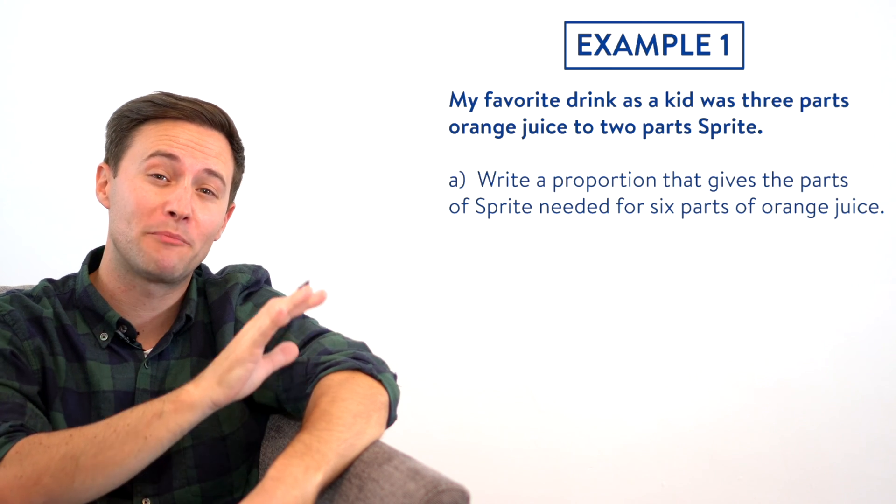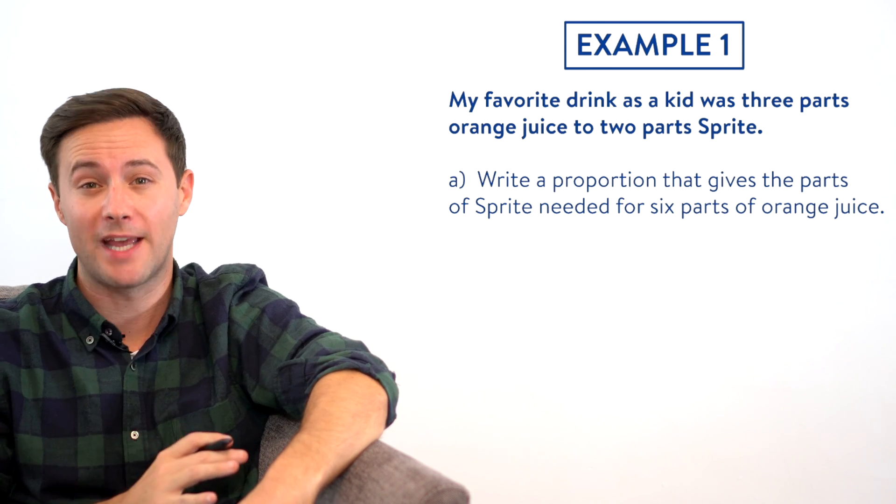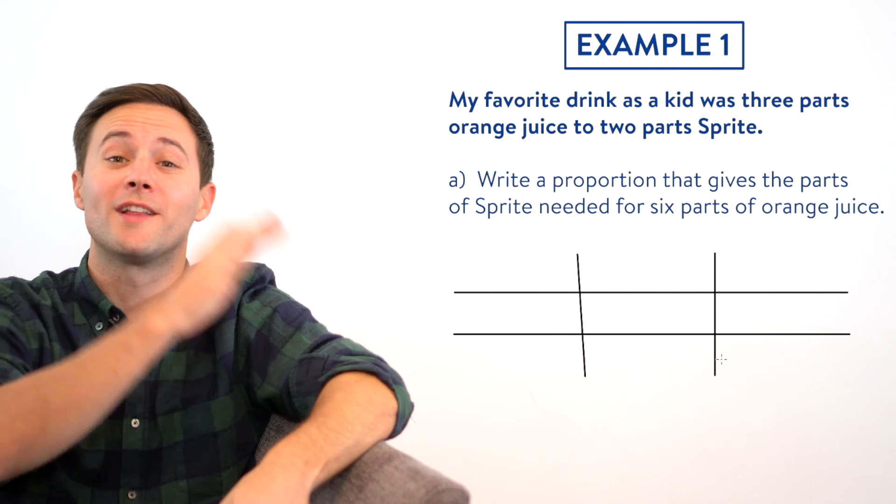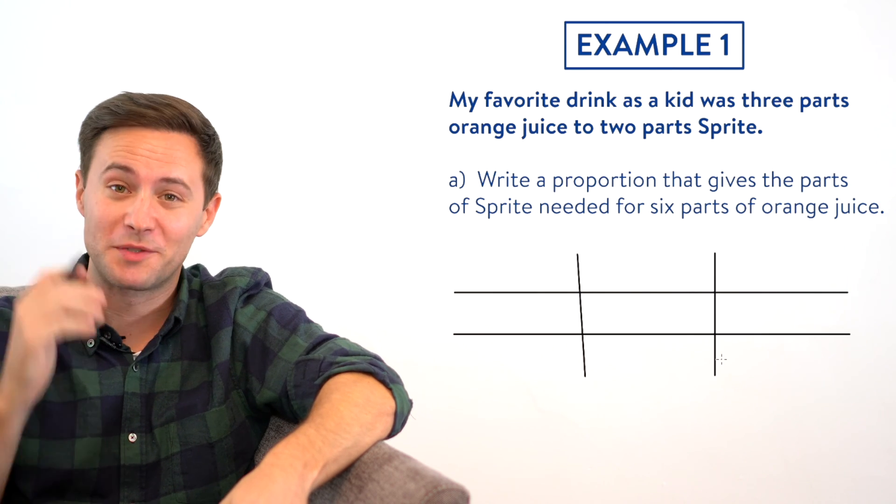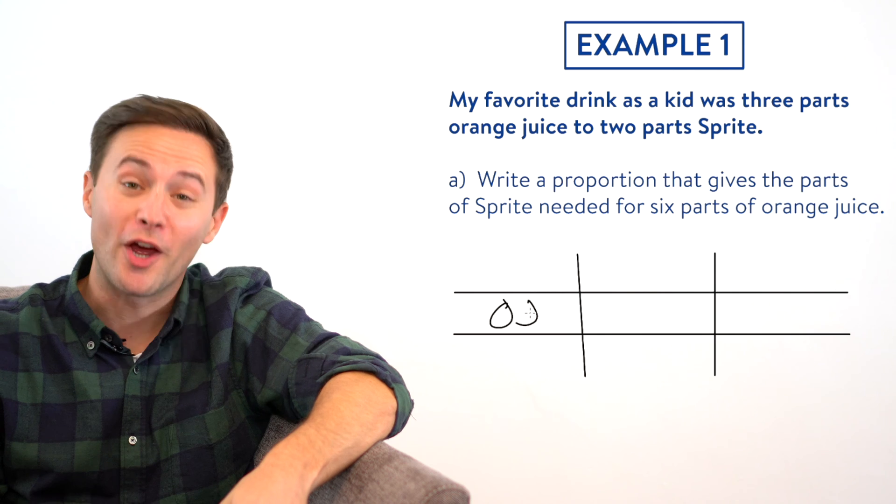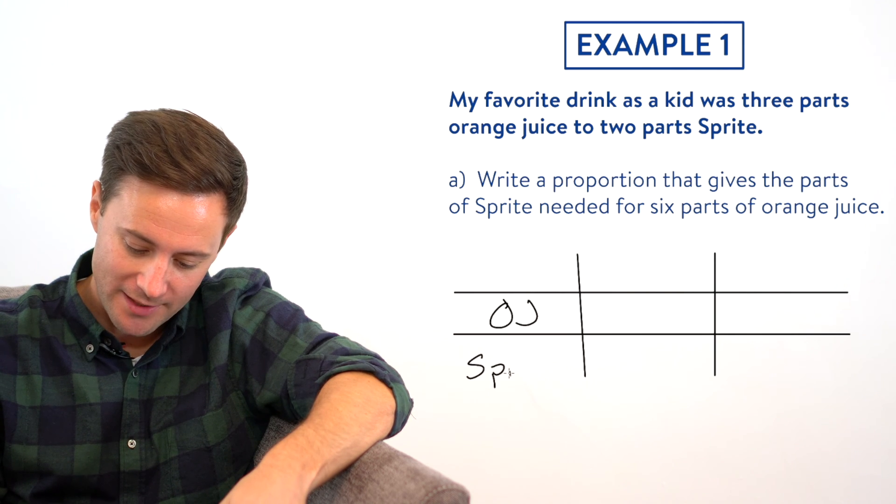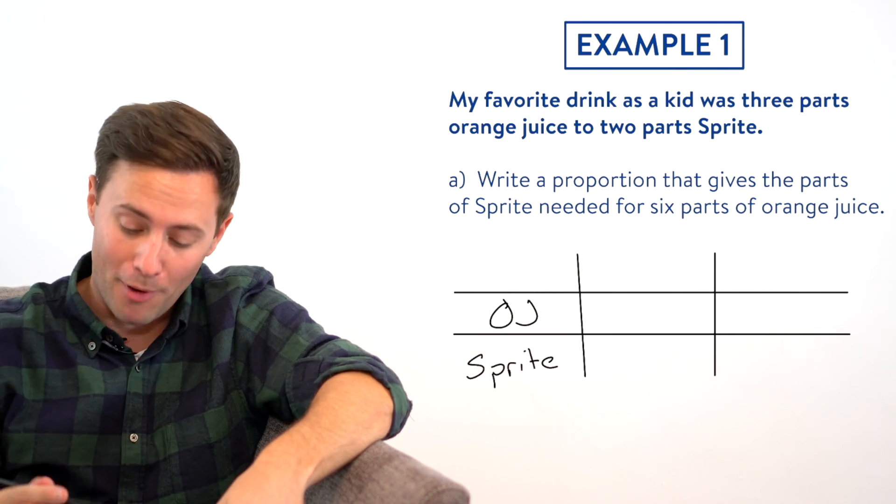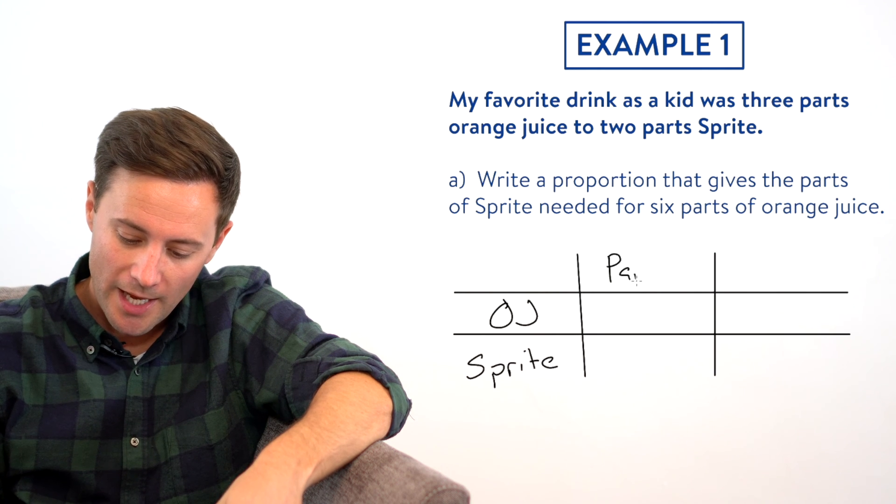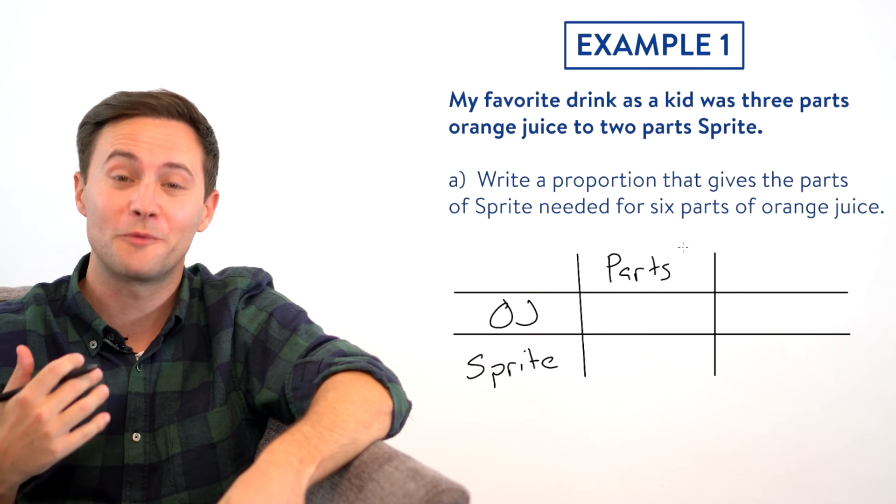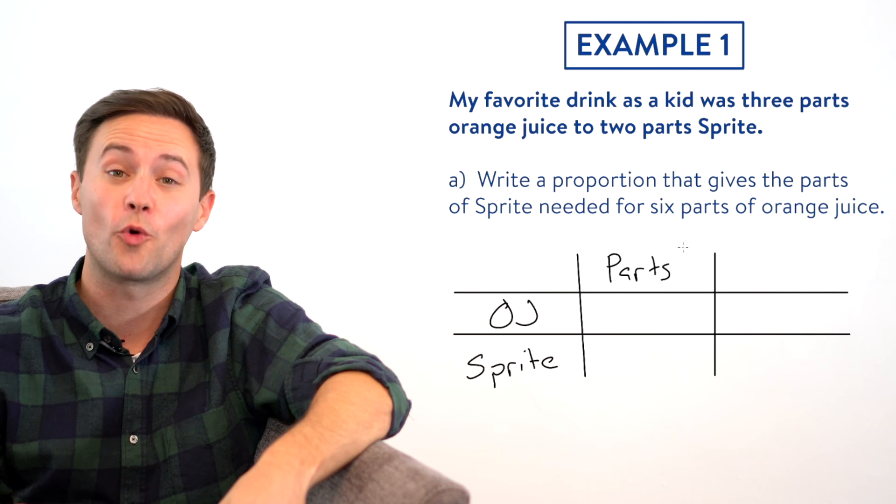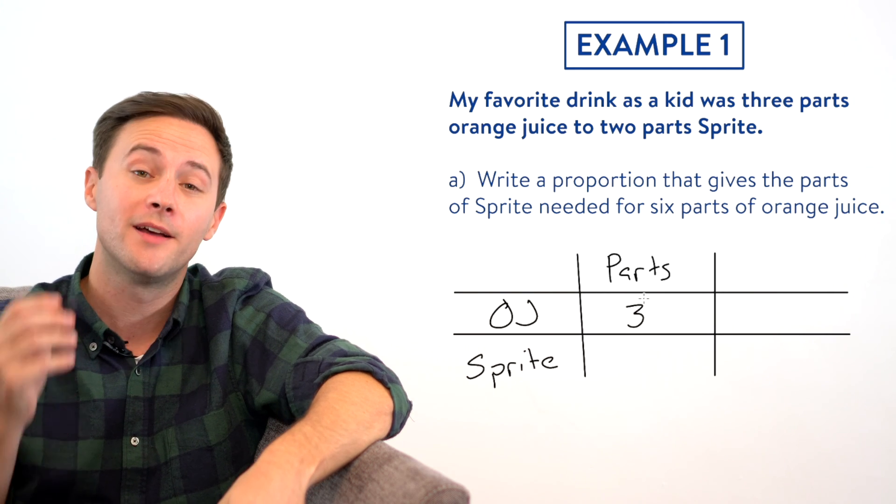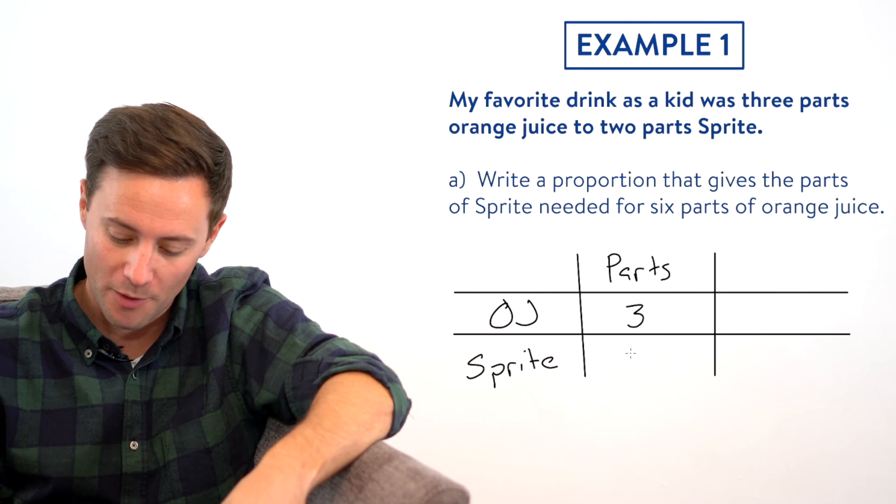One quick tip when you're writing proportions is to first set up a table. So on the left side, we're going to put orange juice and Sprite. I'll just write OJ and Sprite. And then in the first column, I'm going to label that parts. And our original recipe was three parts orange juice, so I'll put a three there to two parts Sprite. I'll put a two there.